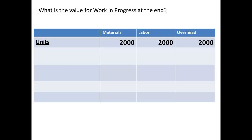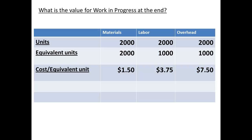Now we need a value for work in progress at the end of the period, which will then become the starting costs for the start of the next period. We have 2,000 units for work in progress for materials, labour and overhead. However, we need these in equivalent units: 2,000 units for materials, but labour and overhead are treated as 50% complete, so we only have 1,000 units for labour and 1,000 units for overhead. We already have our costs per equivalent unit: $1.50 for materials, $3.75 for labour, and $7.50 for overhead. This makes our figures $3,000 for materials, $3,750 for labour, and $7,500 for overhead.